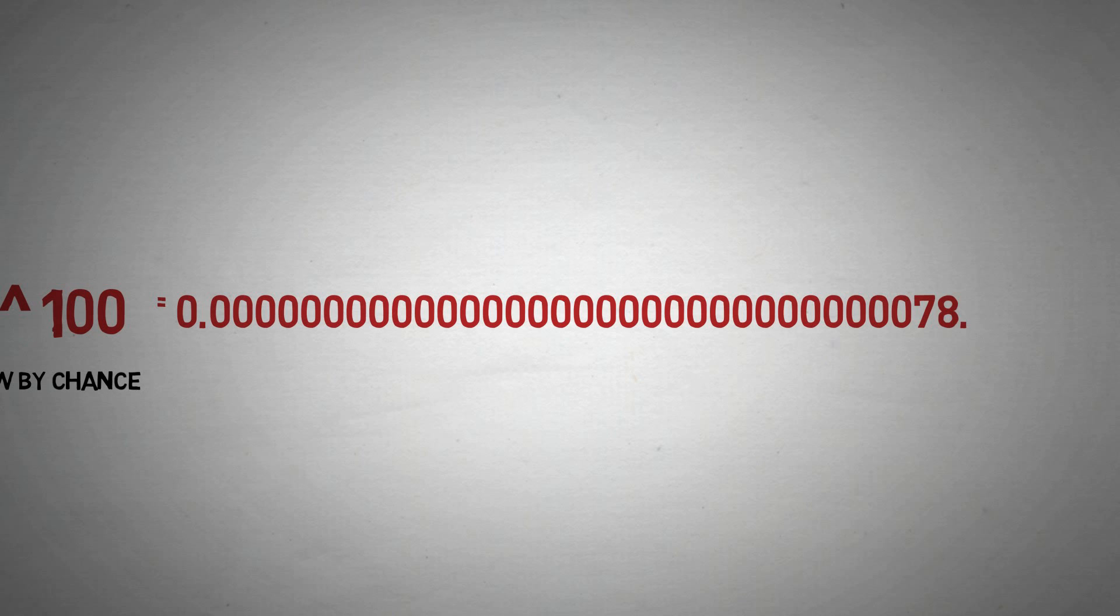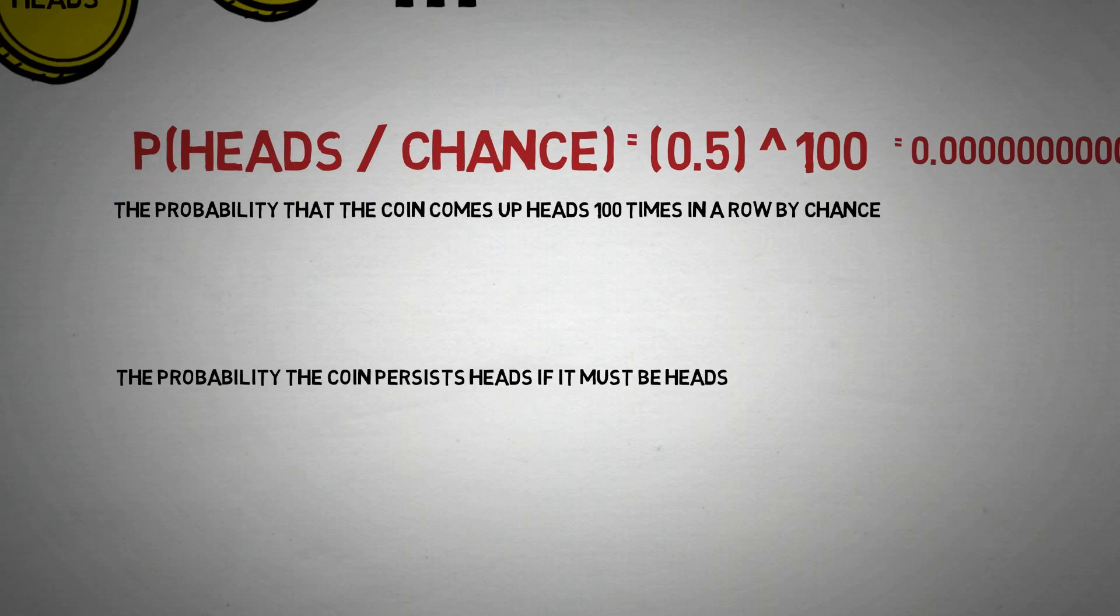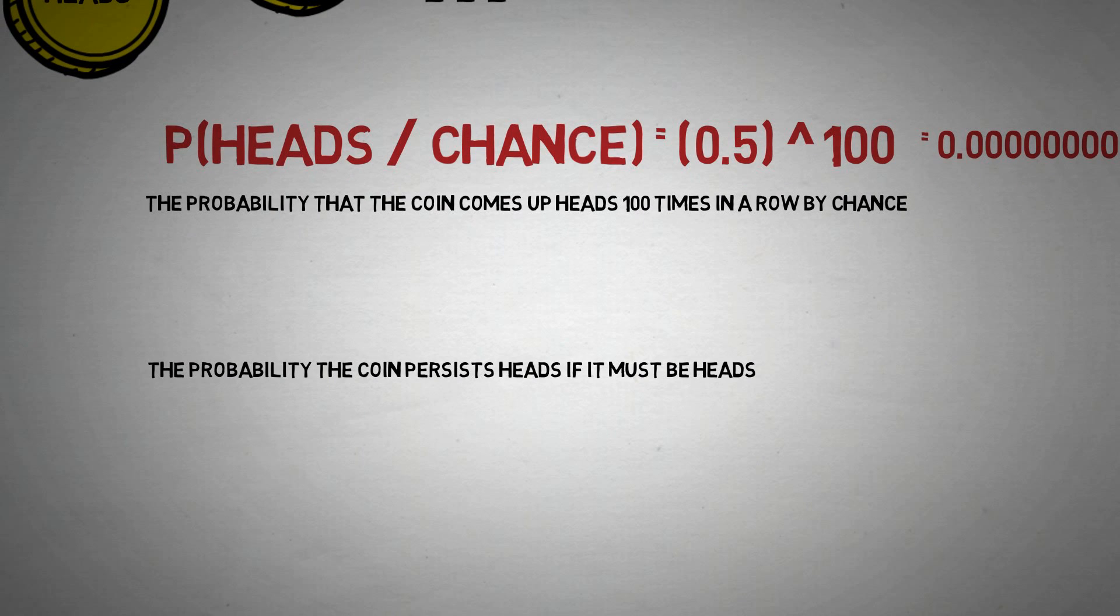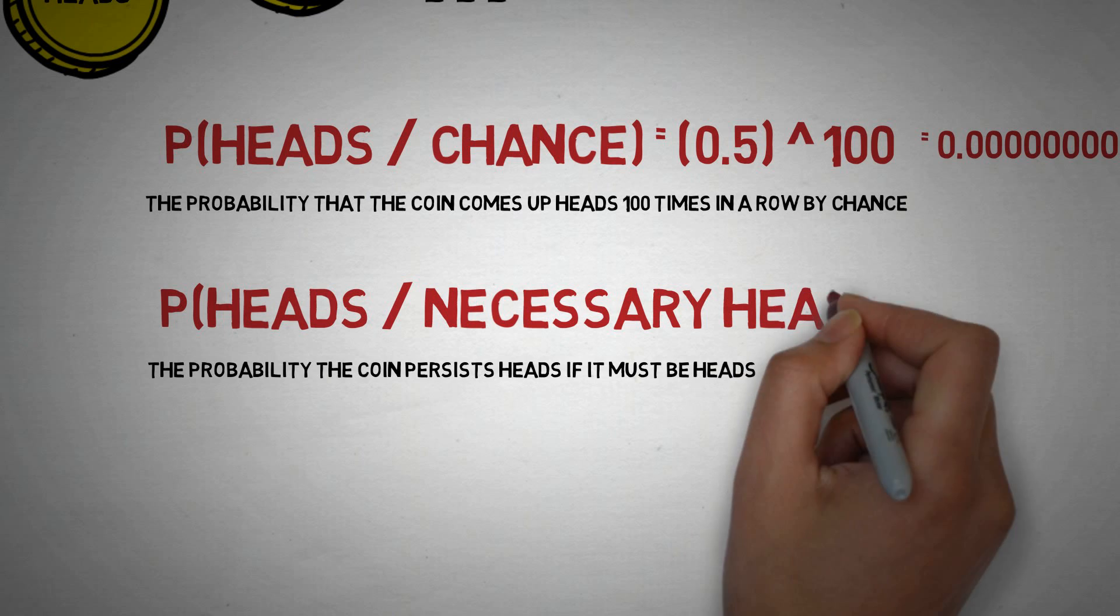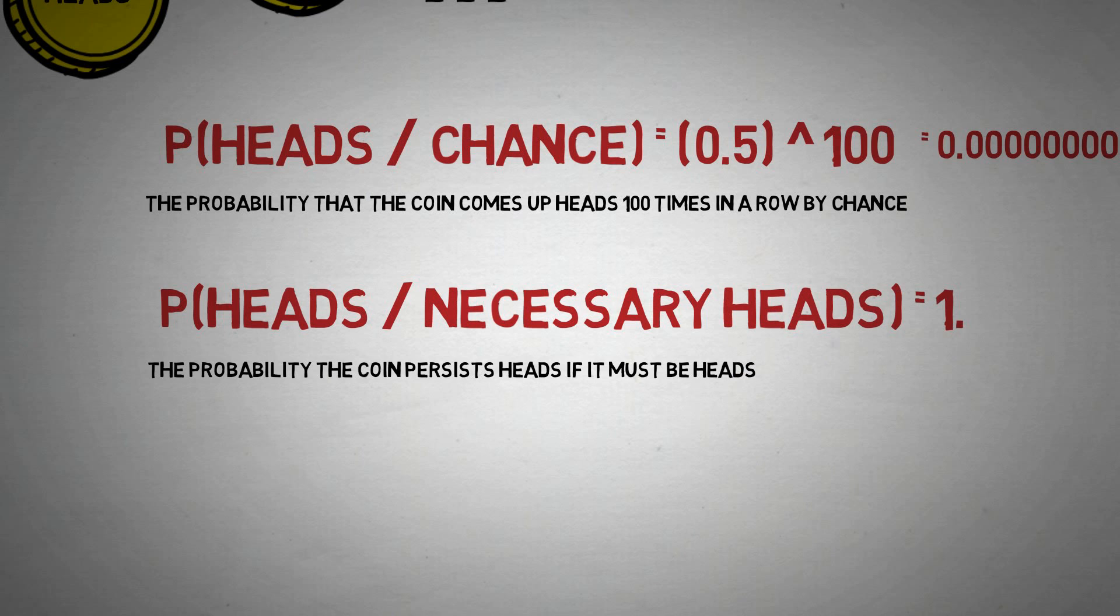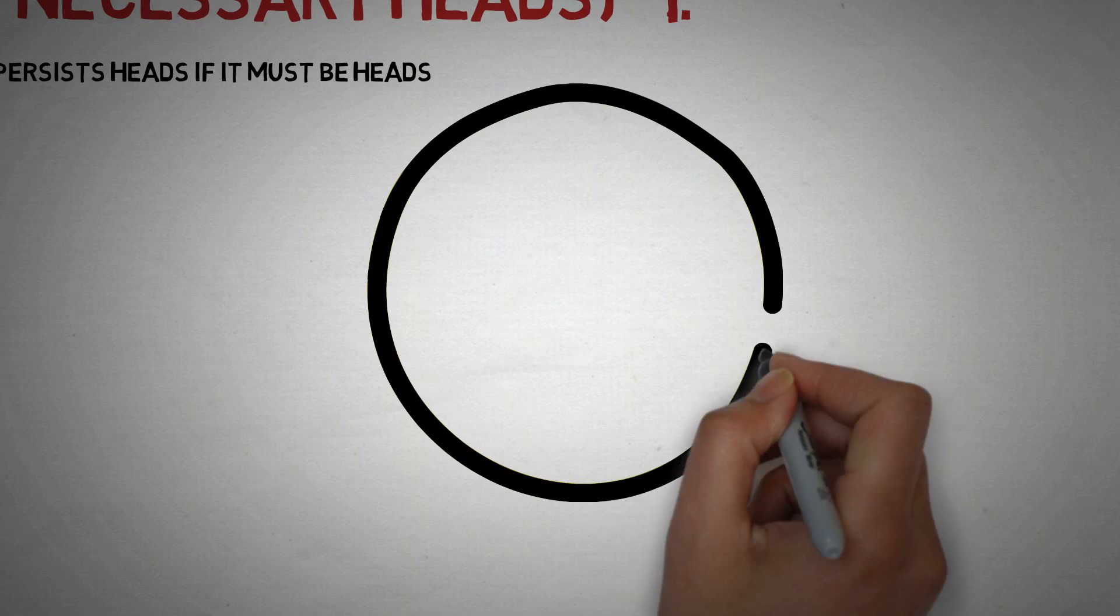By contrast, on the hypothesis that the coin is heads on both sides, let's say, then the coin would be expected to come up heads persistently, or cannot not come up heads.